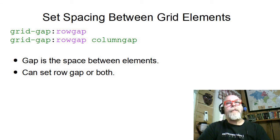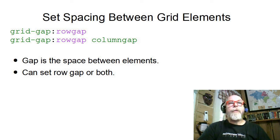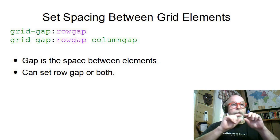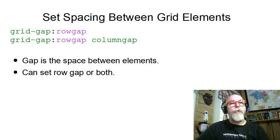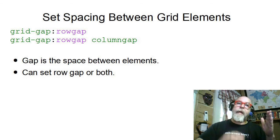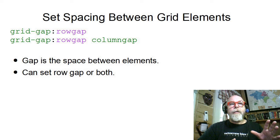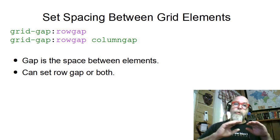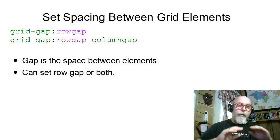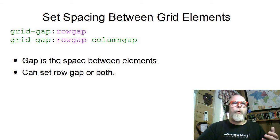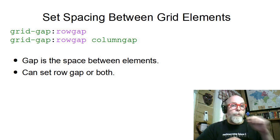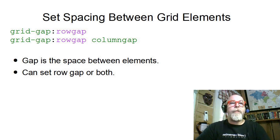We can also add the style grid-gap to our element that's display grid, and it will define how much of a gap to put. We can define one gap, which would be the row gap. And if we define two gaps, it would be the row gap followed by the column gap. So if you want a little space between your rows, you can define grid-gap with one dimension — usually pixels or EMs. And if you want a different gap between rows and columns, you can define that with grid-gap using two dimensions.